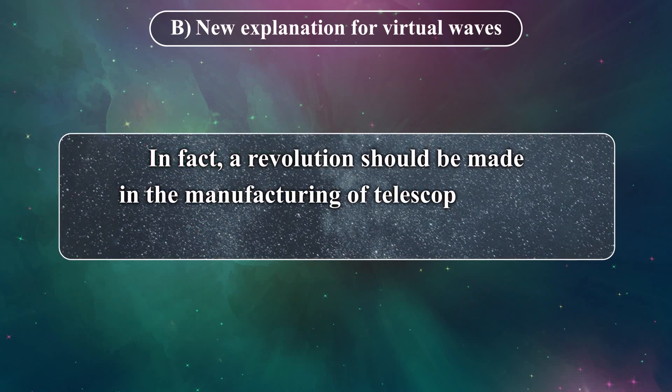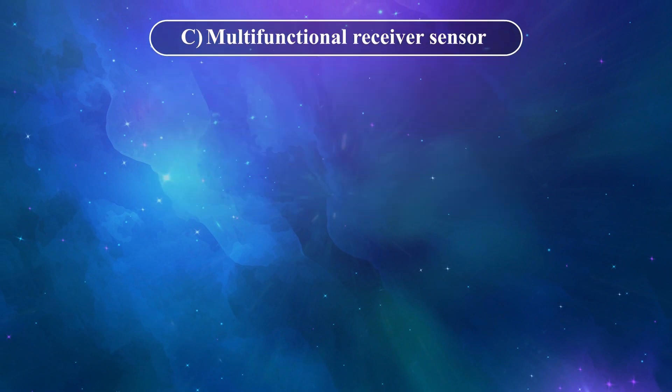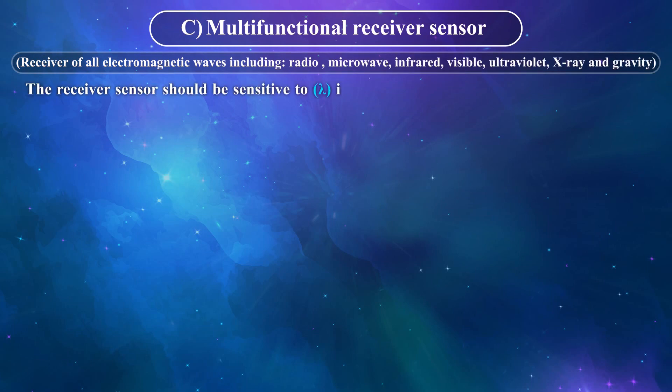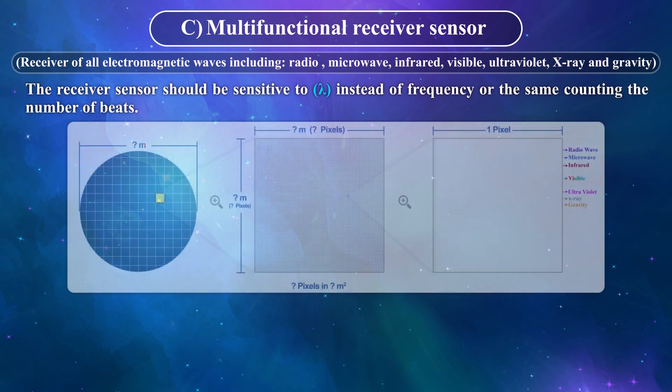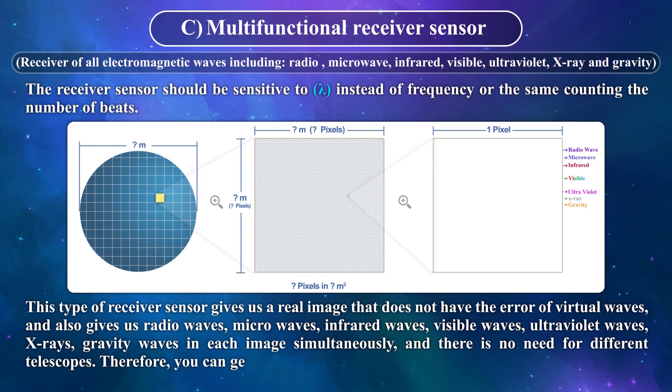In fact, a revolution should be made in the manufacturing of telescopes so that we can get closer to the real truth. Multifunctional Receiver Sensor: Receiver of all electromagnetic waves including radio, microwave, infrared, visible, ultraviolet, X-ray, and gravity. The receiver sensor should be sensitive to lambda instead of frequency or the same containing the number of bits. This type of receiver sensor gives us a real image that does not have the error of virtual waves and also gives us radio waves, microwaves, infrared waves, visible waves, ultraviolet waves, X-rays, gravity waves in each image simultaneously and there is no need for different telescopes. Therefore, you can get a versatile telescope at a reasonable price.